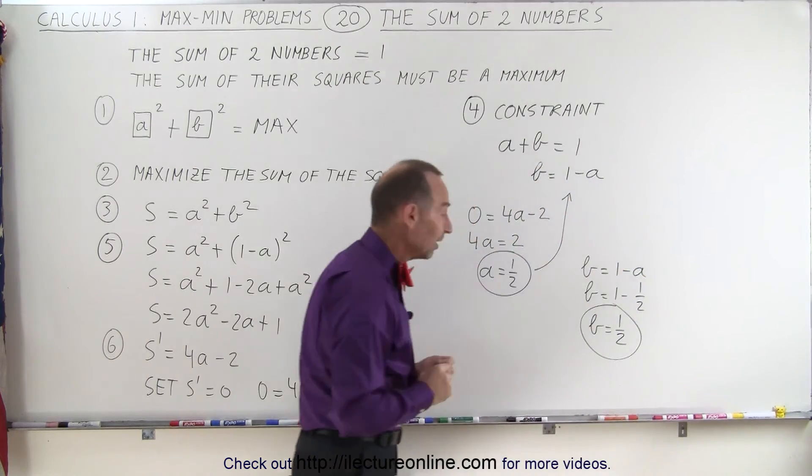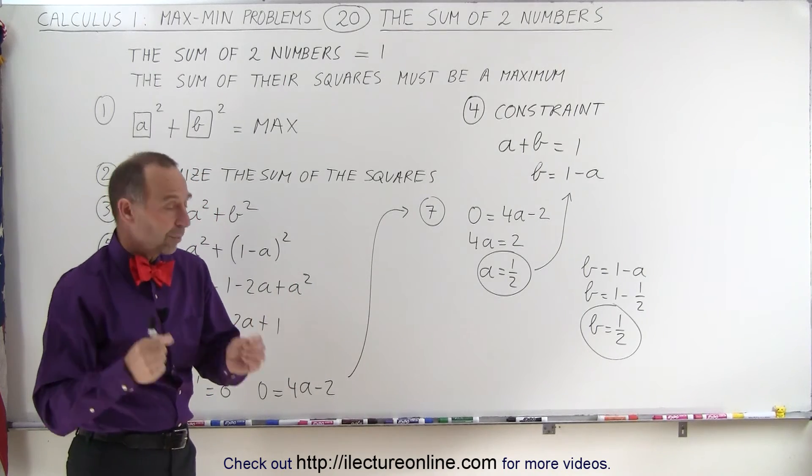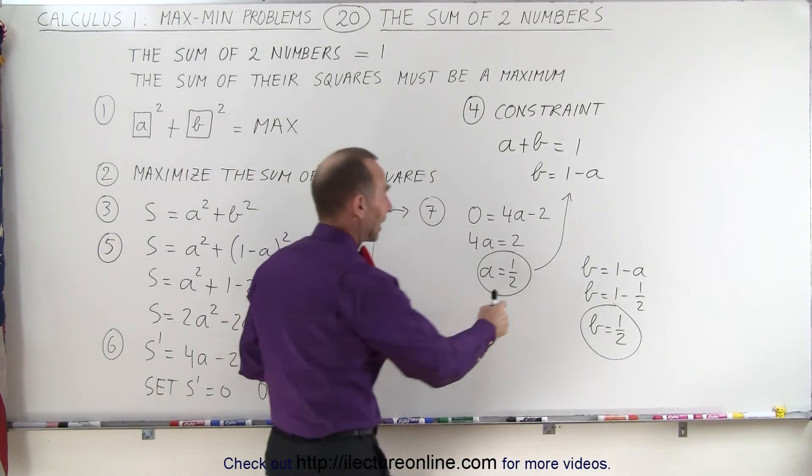In other words, if you have two numbers, and we add them together, and they add up to 1, and you want the sum of their squares to be a maximum value, then each number should be exactly 1 half.